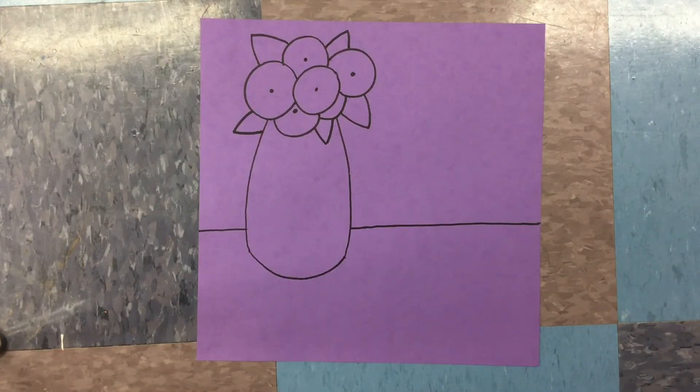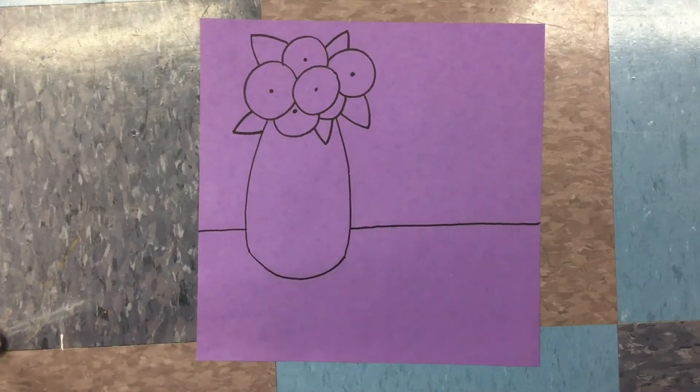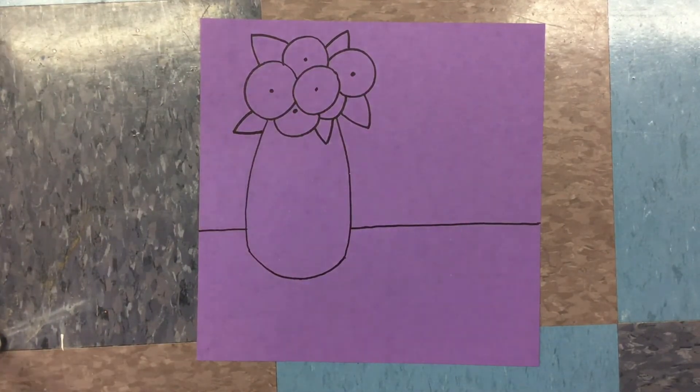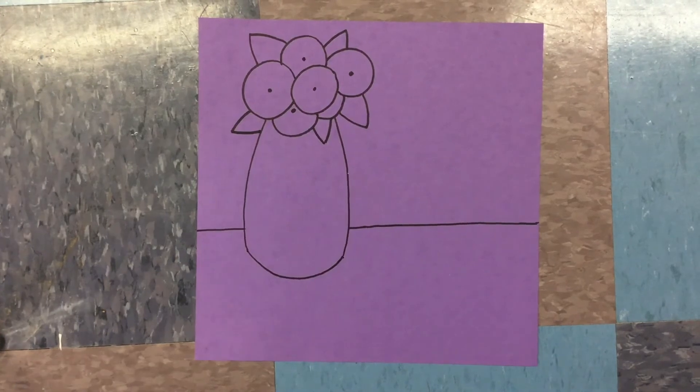The next thing you're going to do now that you're finished with drawing is go over your lines roughly with black tempera paint. If you can see these two examples, they have roughly gone over their pencil lines.